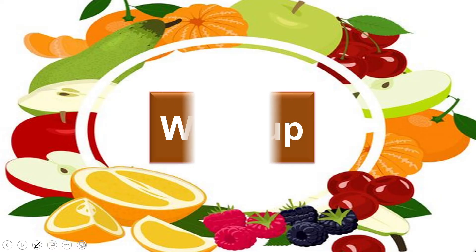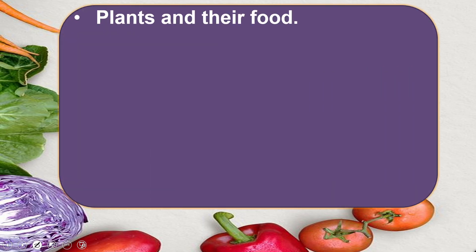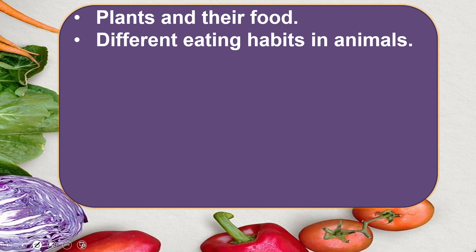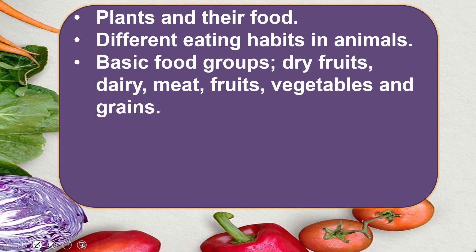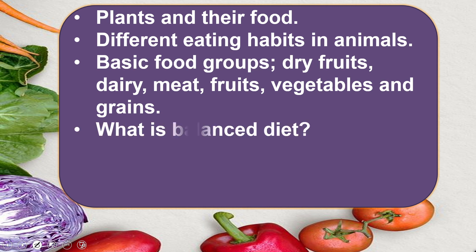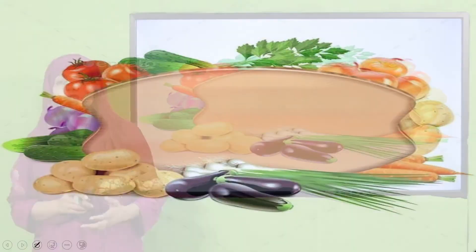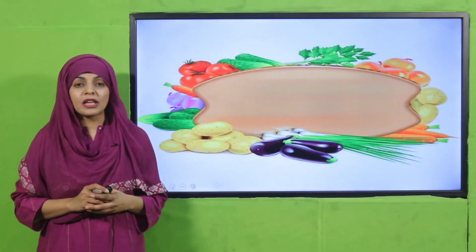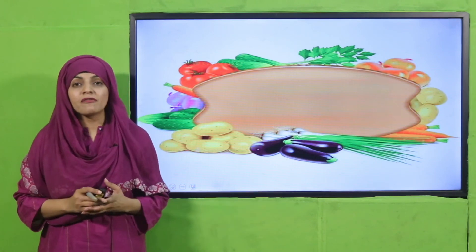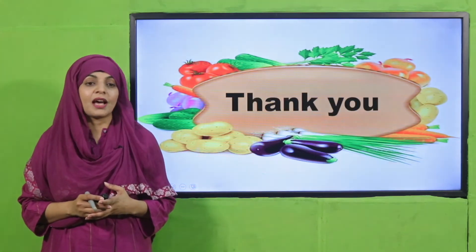From this chapter we learned: how plants make their own food, different eating habits in animals, the basic food groups — dry fruits, dairy, meat, fruits, vegetables, and grains — what a balanced diet is, and the factors of healthy living including a balanced diet, cleanliness, sleep, and regular exercise. I hope you have learned a lot from this unit. Keep everyone around you safe, have a good day, thank you so much. Allah Hafiz.